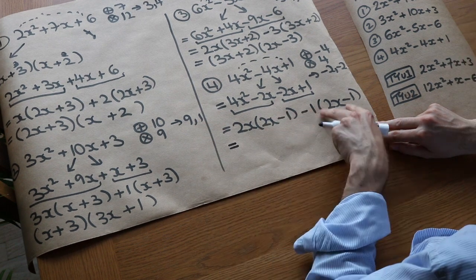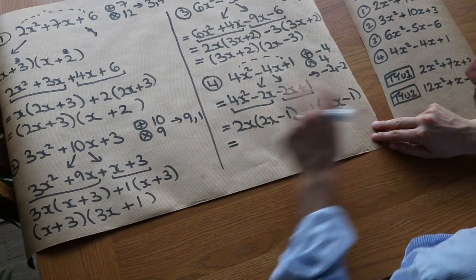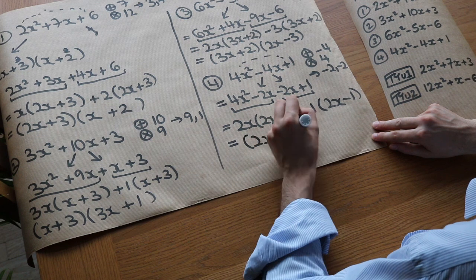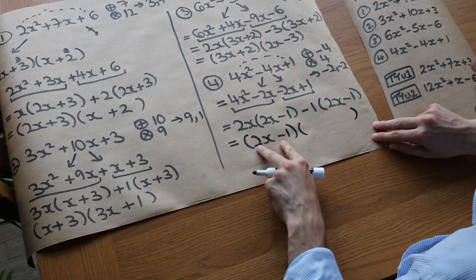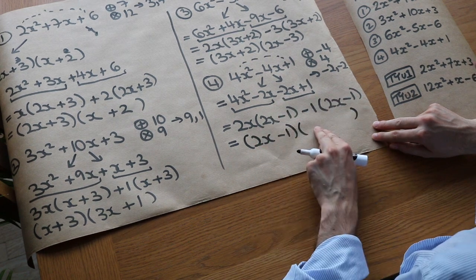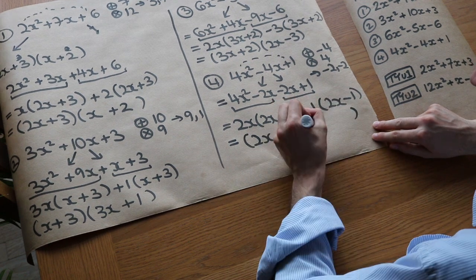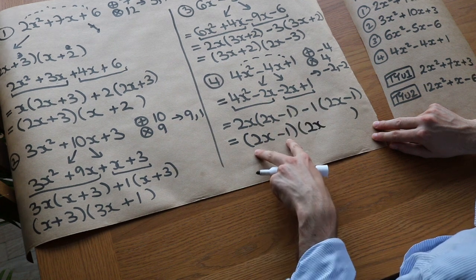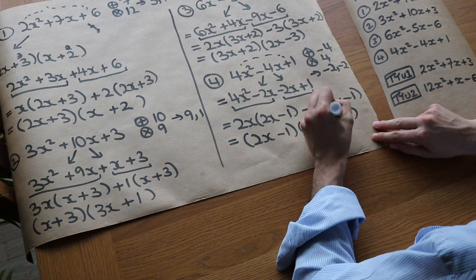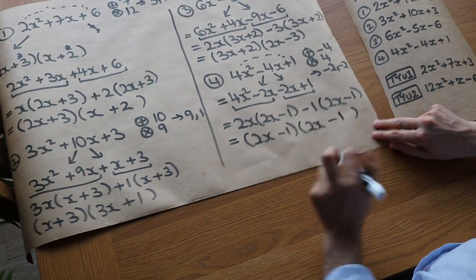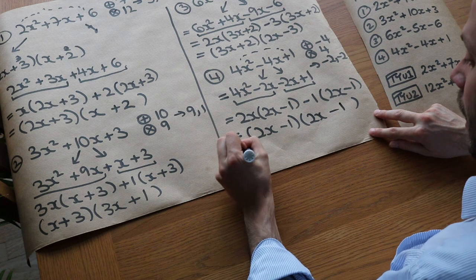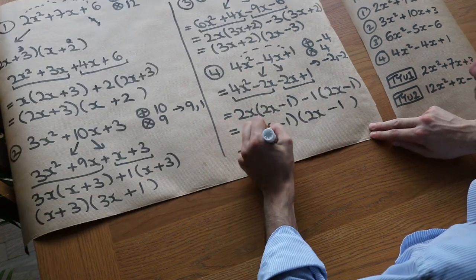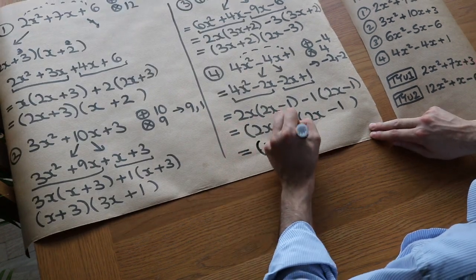Now these both have a common factor of 2X minus 1, so we factorise that out. 2X minus 1 times what gives 2X times 2X minus 1? Well it's just 2X. And 2X minus 1 times what gives minus 1 times 2X minus 1? Well it's minus 1. So we get 2X minus 1 times 2X minus 1, which we can write as 2X minus 1 squared.